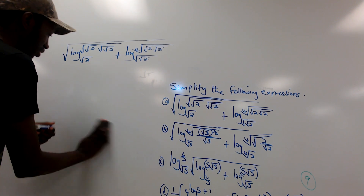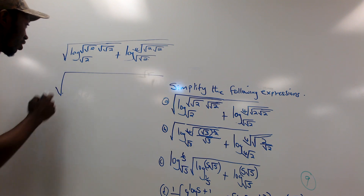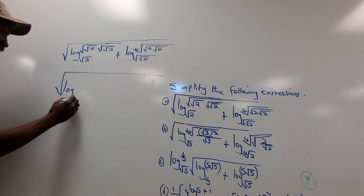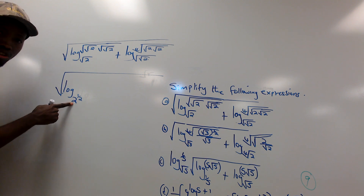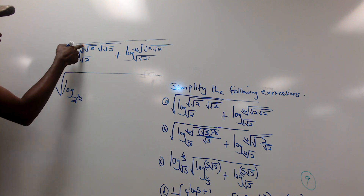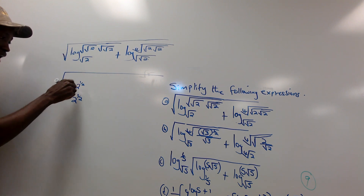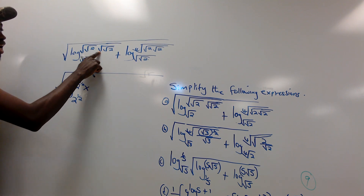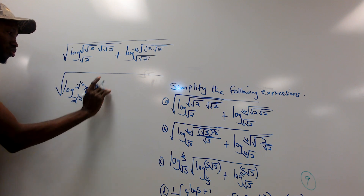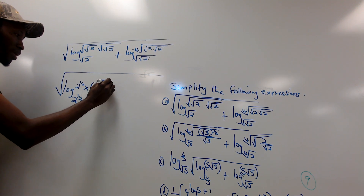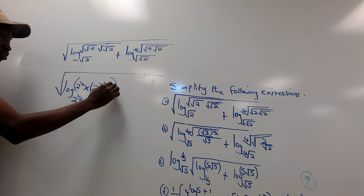Now applying these to Problem A: we take the log of root 2, writing root 2 as 2 raised to power 1/2. The base is 2 raised to power 1/2. For the argument with two nested square roots, 2 has two square roots so the power is 1/2 × 1/2 = 1/4, giving 2 raised to 1/4. The entire expression is raised to power 1/2.